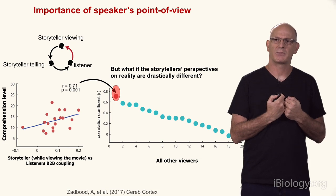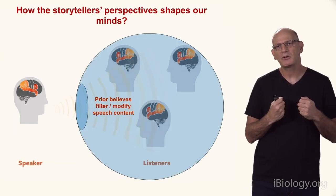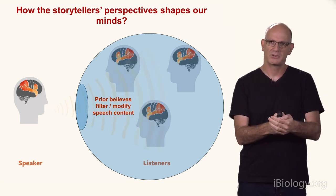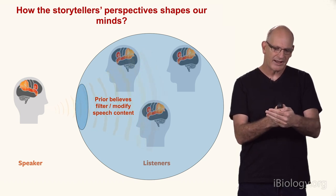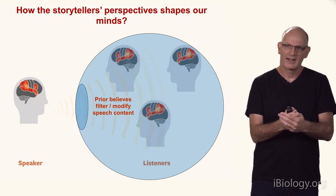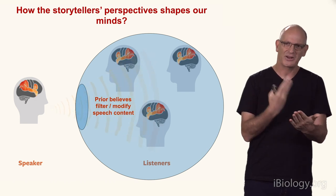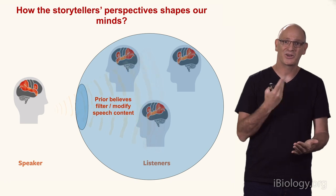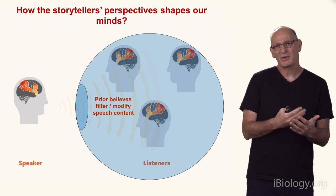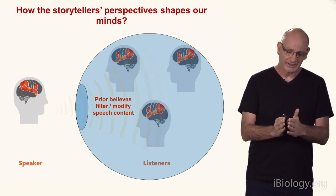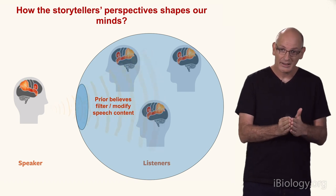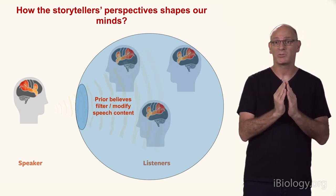Now we have to complicate our model of communication a bit. I want to be coupled to your brain and make you similar to mine. But between you and me, there are different memories and different perspectives, so it's not easy to make your brain similar to mine. In early areas, it's easy — I can produce sound and your auditory cortex is going to go up and down. But if I want you to understand me in these higher-order areas that integrate information over many minutes and really depend on all your memories over time, I need to align the way we understand the world. These are filters between you and me.